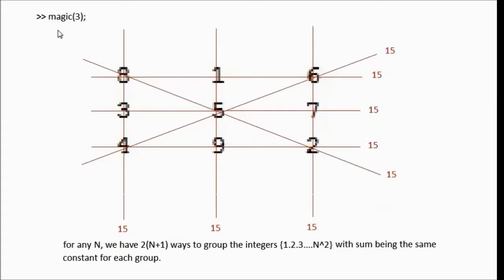Let's look at magic 3 in some detail. The entries are 8, 1, 6, 3, 5, 7, 4, 9, and 2. The row sums and column sums are all shown by crossing lines. There's a line crossing going over the diagonal entries and the second diagonal. It's easy to verify that the sums add up to 15 for each of these combinations shown by these lines.